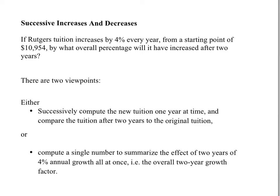There are two viewpoints, two ways of looking at this. We can either successively compute the new tuition one year at a time and then compare the tuition after two years to the original tuition, or we can compute a single growth factor to summarize the effect of two years of 4% annual growth all at once. That is an overall two-year growth factor.